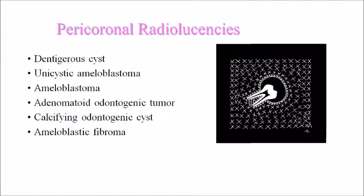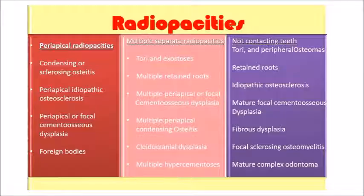Mixed radiolucent-radiopaque lesions in the pericoronal region include odontoma at intermediate stage, AOT (adenomatoid odontogenic tumor), calcifying odontogenic cyst, ameloblastic fibro-odontoma, and calcifying epithelial odontogenic tumor. Pericoronal radiolucencies include dentigerous cyst (surrounding the crown), unicystic ameloblastoma, ameloblastoma, AOT, calcifying odontogenic cyst, and ameloblastic fibroma.